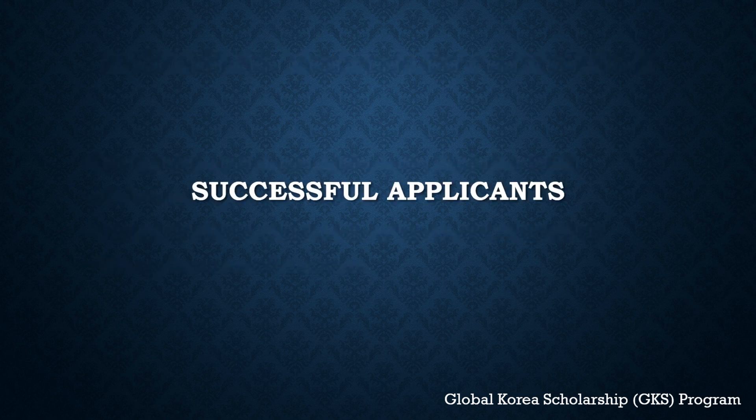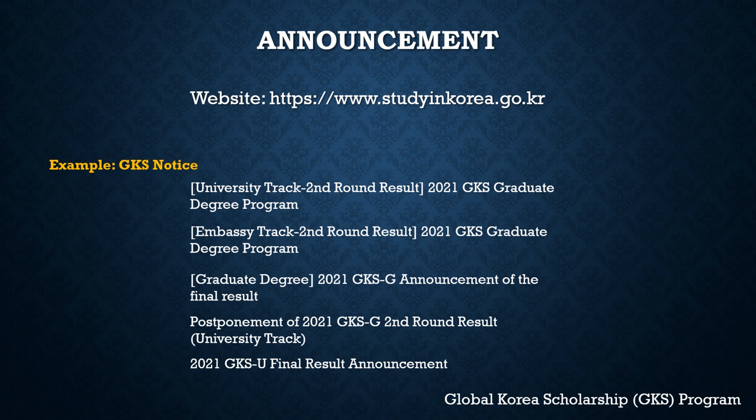Now let's see how you can check the list of successful applicants. The announcement will be made on the Study in Korea website — you can check the link in the description, which will give you guidelines to check your application status. Simply open the link and go to the GKS notice page. There you can see all the information: when the application will be announced, when the first round selection will be announced, and when you will finally get the results.